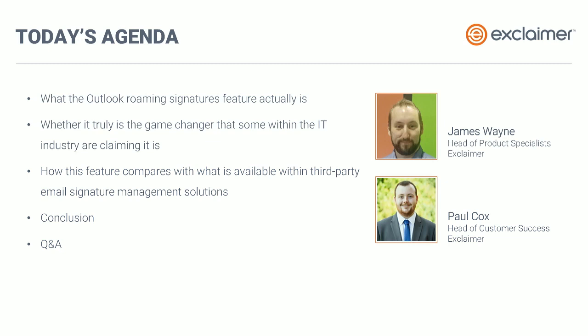So today, what we're going to be talking about in this webinar is Microsoft's new feature for Outlook for Windows Desktop, which is commonly known as Outlook roaming signatures. This feature basically allows email signatures to be stored within a user's mailbox rather than a local device. And while some people are saying that this is fantastic news and it's long overdue from Microsoft, there's actually a great deal of inaccurate information being circulated about this new feature.